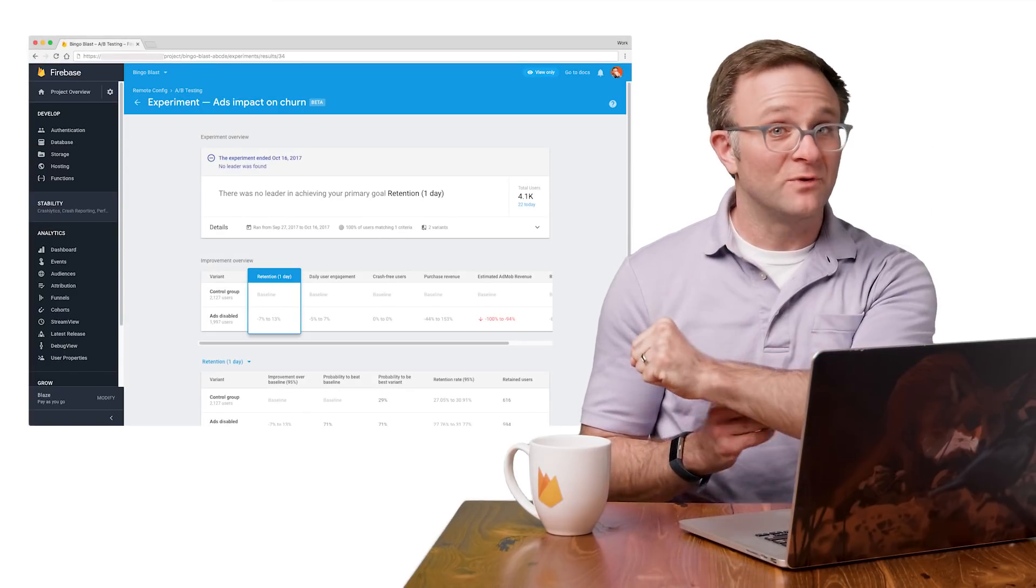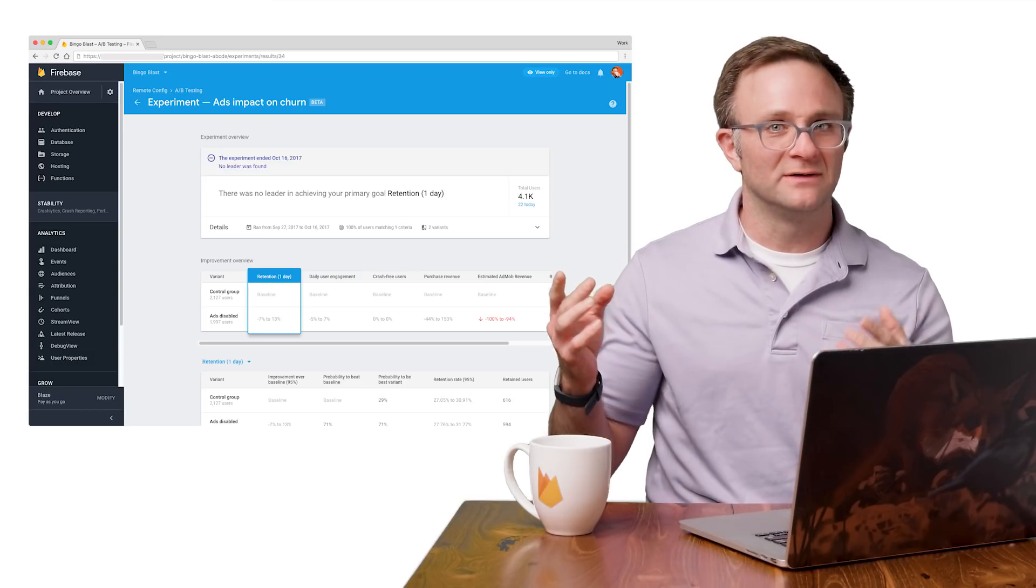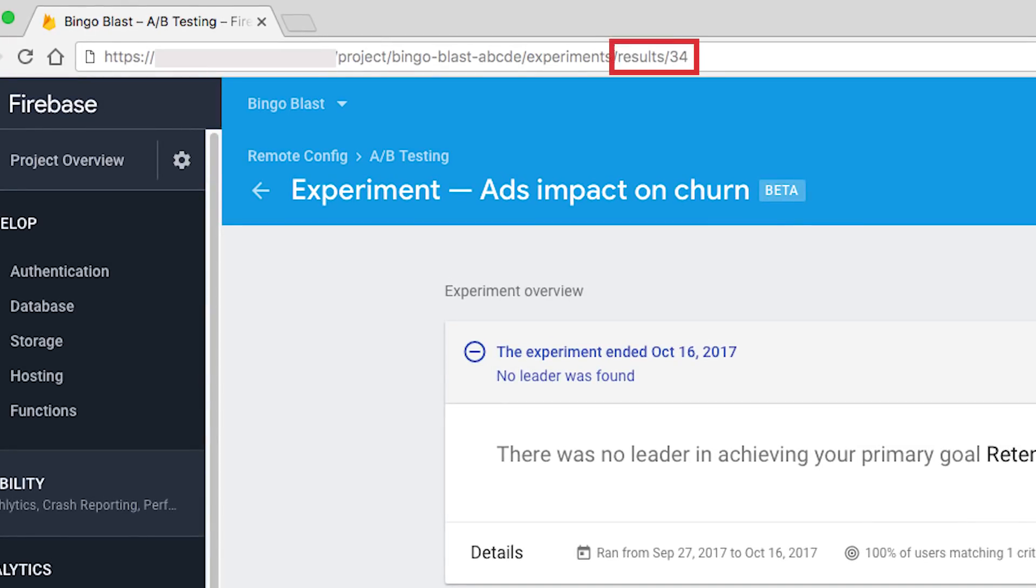So first, to find out the number of your experiment, go ahead and open up your original experiment in the Firebase console. So you see that number there at the end of the URL? That is your experiment number. Now, the value of this Firebase underscore exp underscore experiment number property will be set to 0 if your users in the control group, one if they're in the next variant, two if they're in the variant after that, and so on and so forth. And of course, it'll be null if your user wasn't placed into this experiment at all.